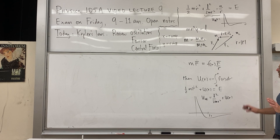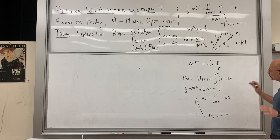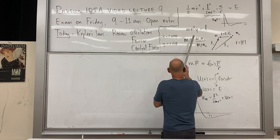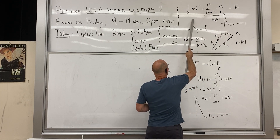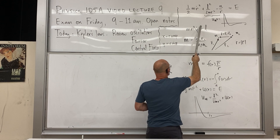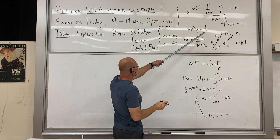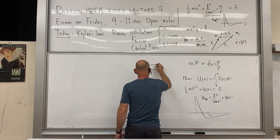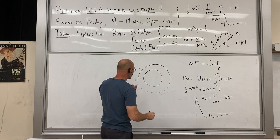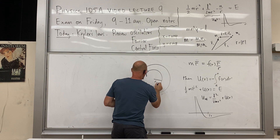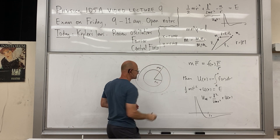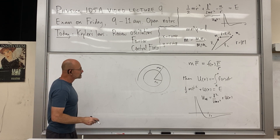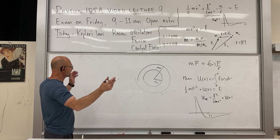Analyzing the effective potential graph lets you draw conclusions about the orbit. The angular motion part of the expression tells you what's going on. One key result: if the potential has a local minimum, you can have a bounded orbit between a minimum and maximum r. That should suffice for the central force review.